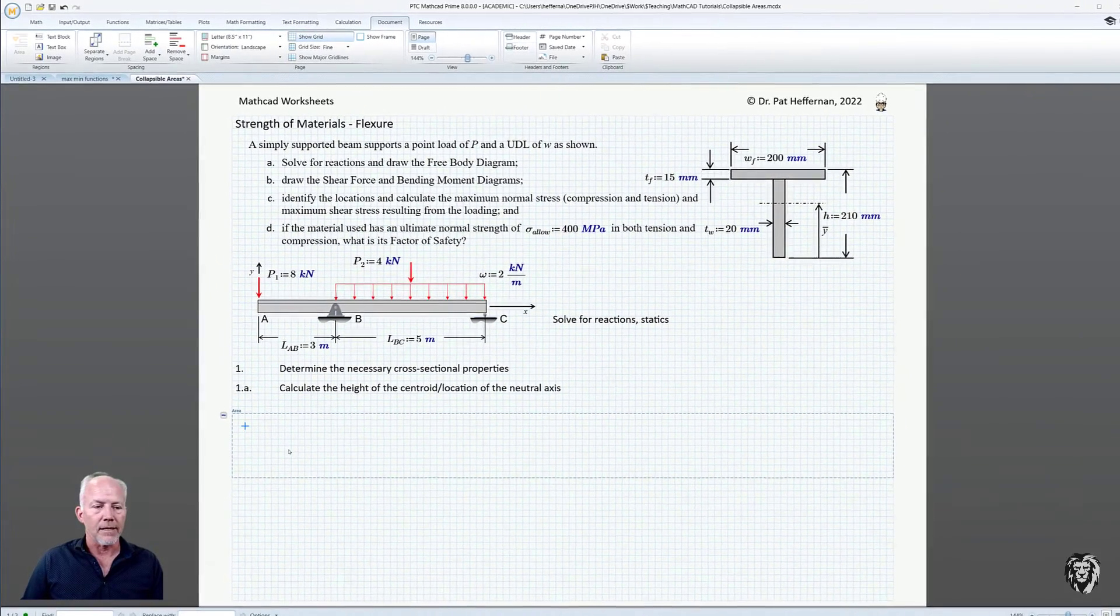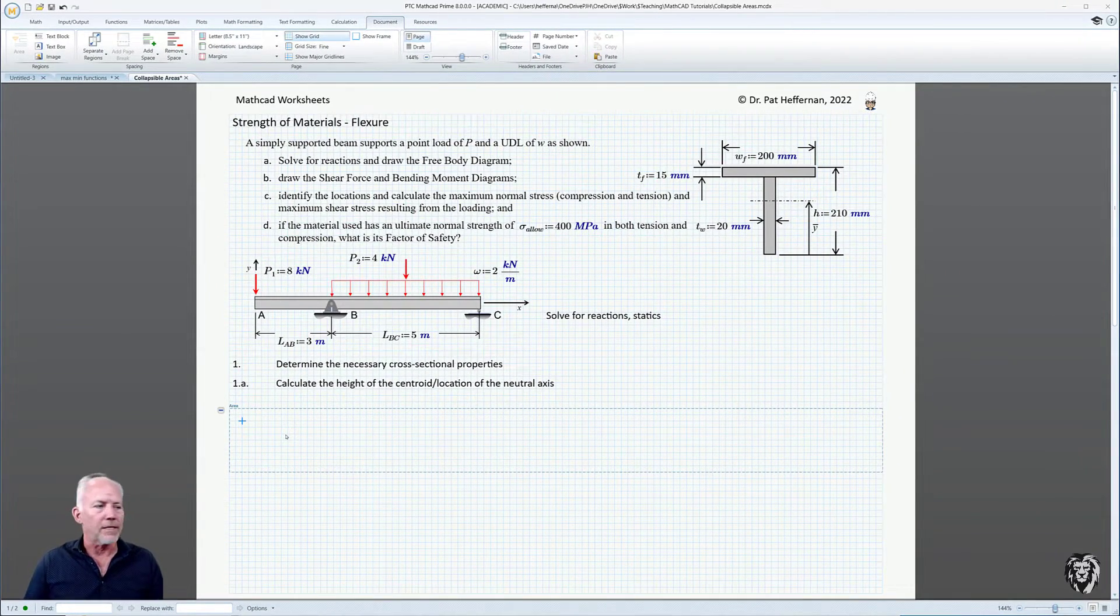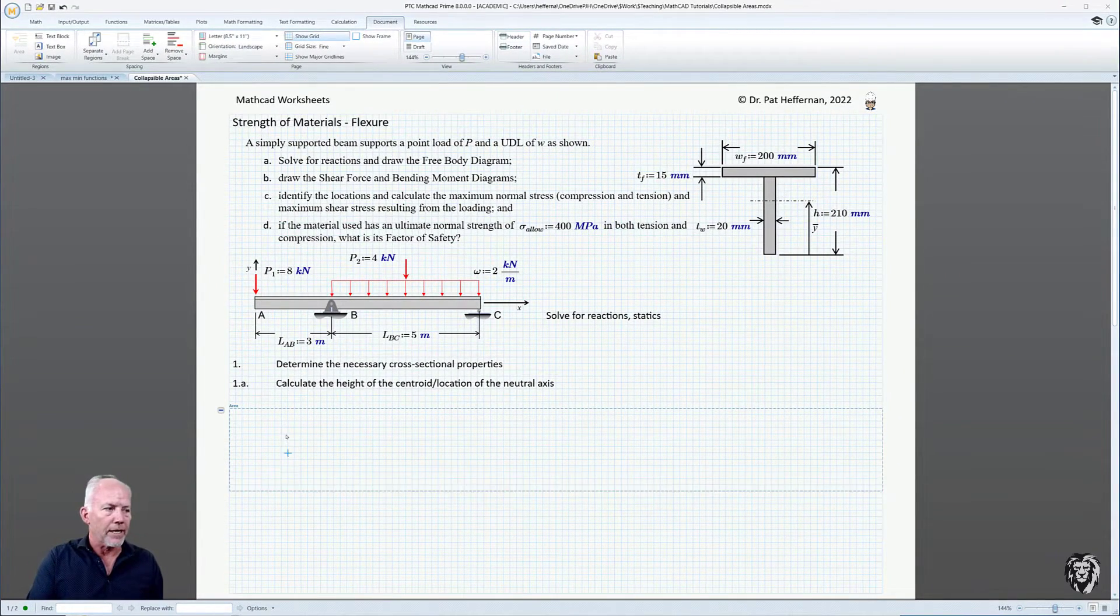And I don't use it that often, so I don't use it so often that I remember the shortcut. So I just go use the button. And now it adds in a collapsible area. Now it offers it as a default size, but obviously we can increase the size if I hit my enter key while I'm inside it, or otherwise add space using the add space button.